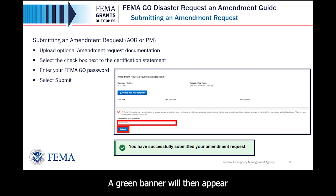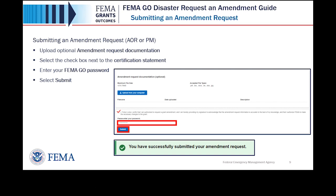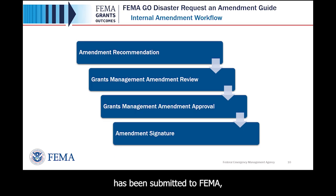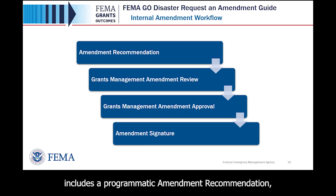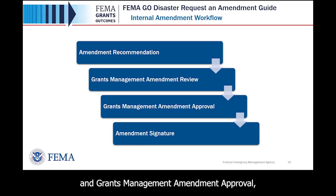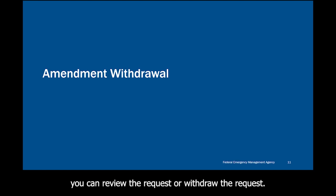A green banner will then appear stating that you have successfully submitted your amendment request. After the amendment request has been submitted to FEMA, there may or may not be required internal reviews that follow. The internal amendment review process includes a programmatic amendment recommendation, then a grants management amendment review and grants management amendment approval, followed by an amendment signature. After you have submitted an amendment request, you can review the request or withdraw the request.